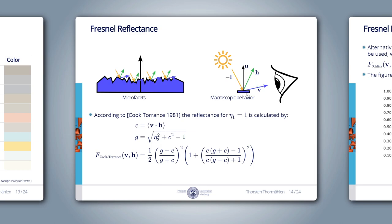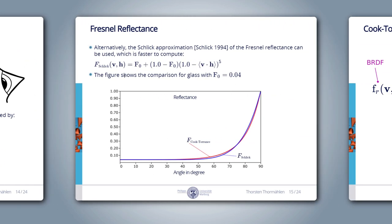In the paper by Cook and Torrance from 1981, the Fresnel reflectance for eta1 = 1 is calculated using equations involving the dot product of the view direction and the macroscopic halfway vector. Though these equations do not use trigonometric functions, they are computationally expensive. Therefore, the faster Schlick approximation is used in many implementations. A comparison between Schlick's approximation and the true equations for glass shows that at theta1 = 0 we get 4% reflectance, and at grazing angle of 90 degrees the reflectance is 100%. The approximation follows the true graph reasonably well.